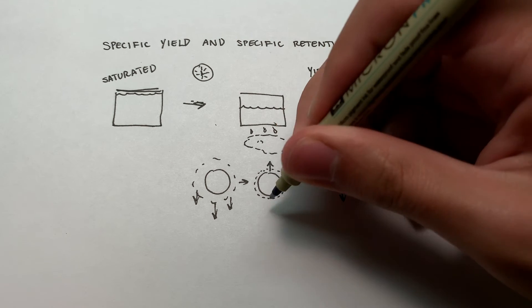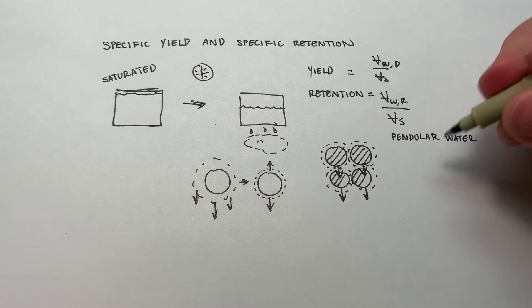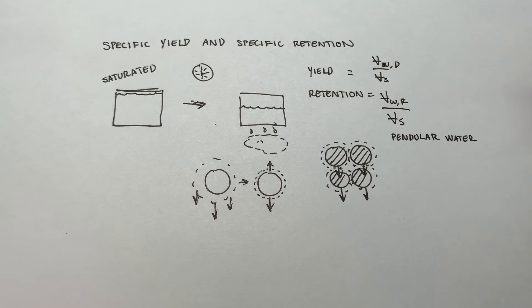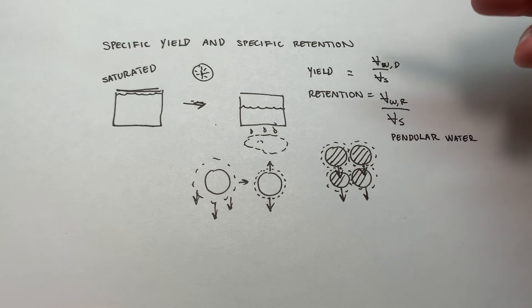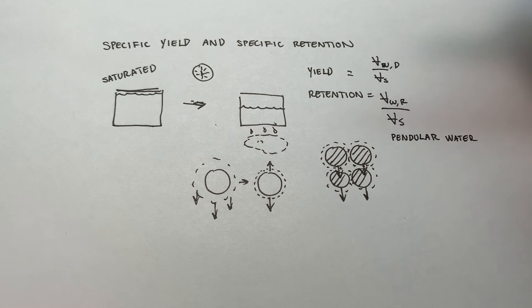So we've got surface tension kind of pulling that water up and gravity pulling it down and those cancel each other out, allowing us to have retained water. And it does not matter how long you let this drain, how long you let it sit for. Time could go on infinitely long and this water will stay there.